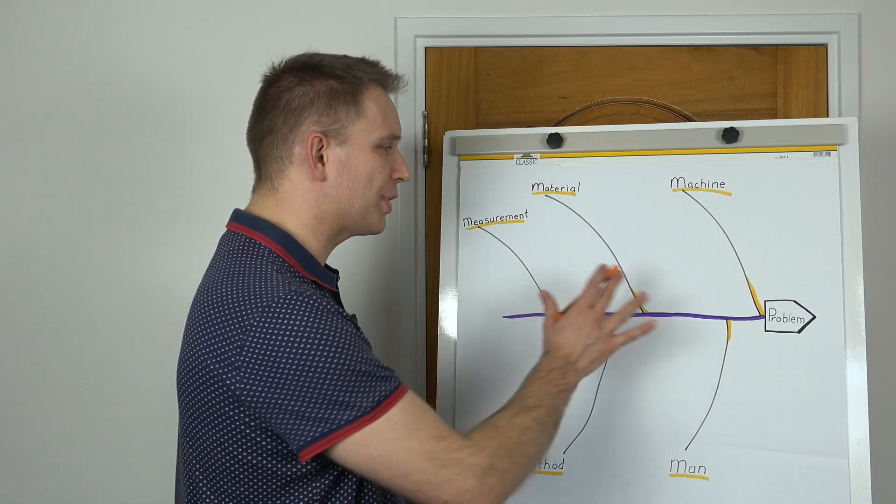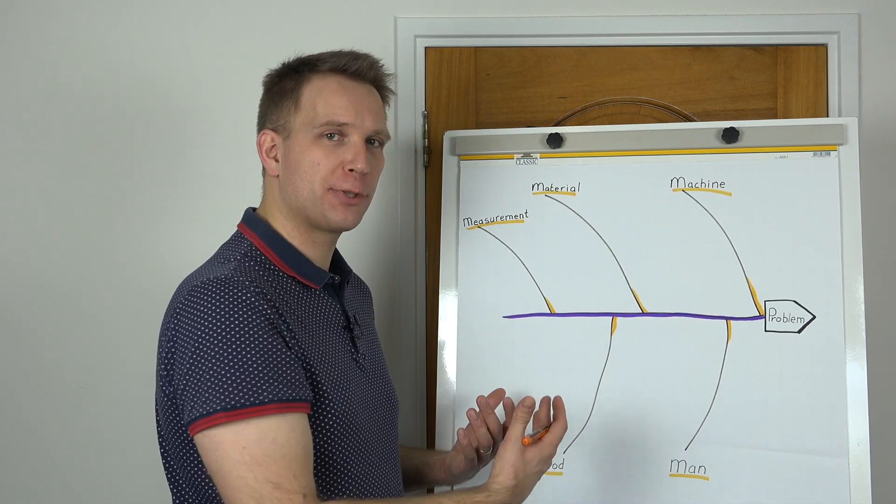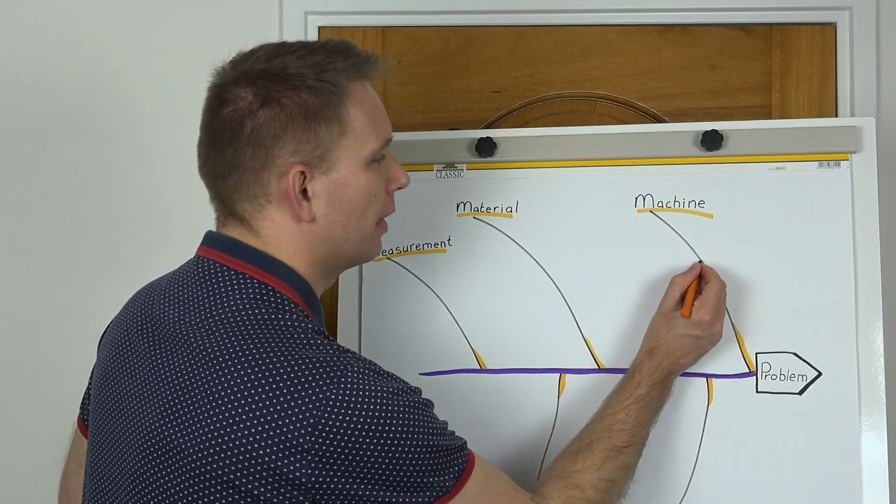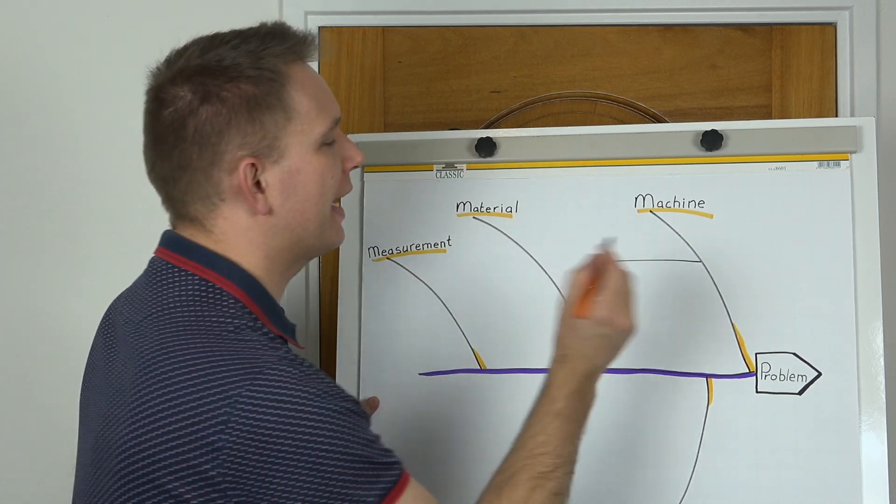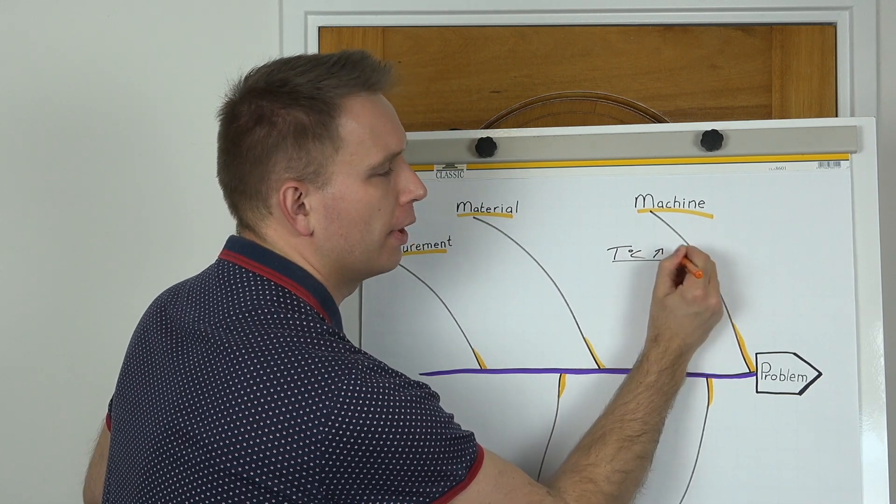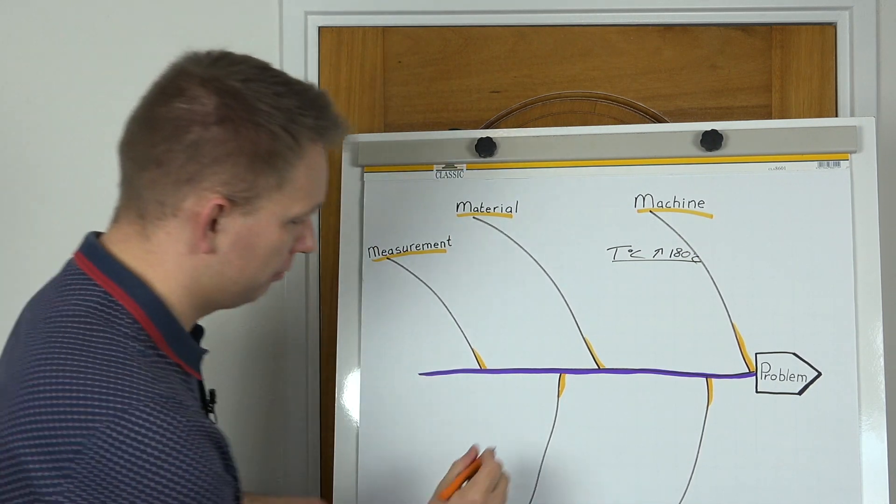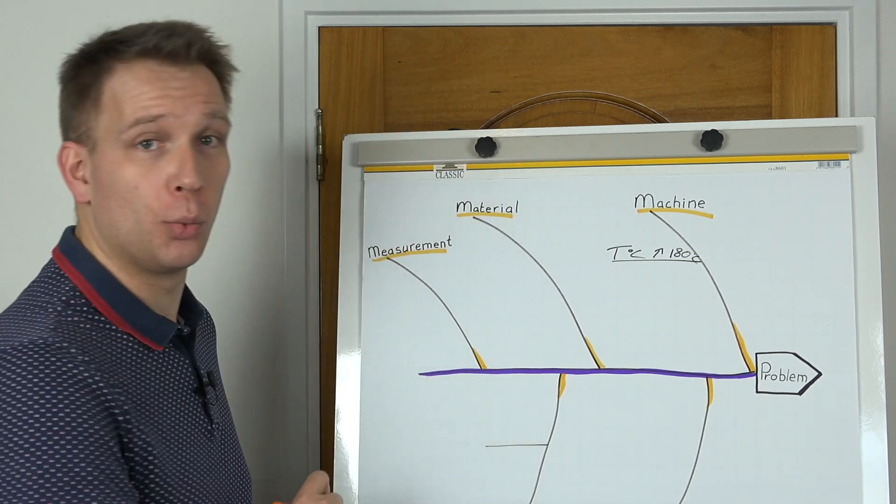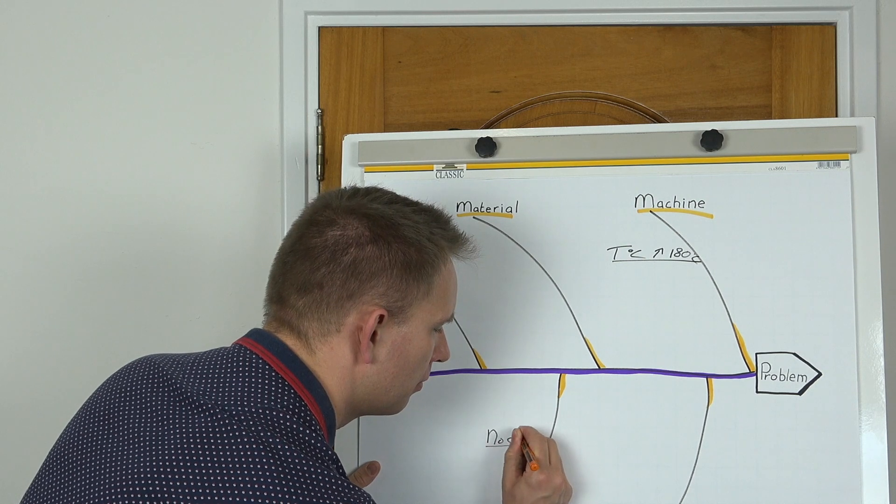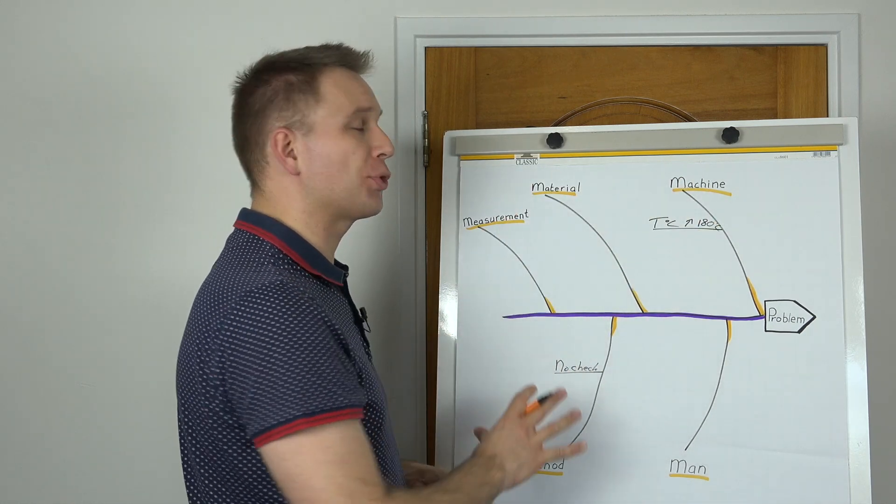The basic way to use this diagram is that you have a problem description and then you state the main categories where you expect your causes. The first level is to have a physical cause. For instance, in machine we can have that the temperature goes over 180. And with method we could have that there is no check during a shift. Like this you try to find causes in each of those categories.